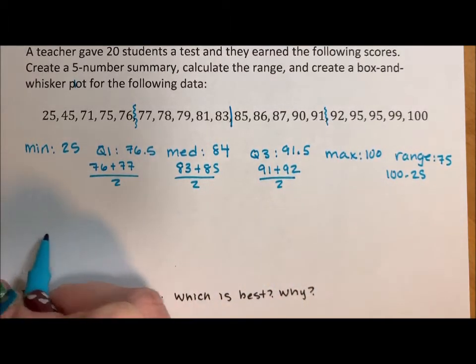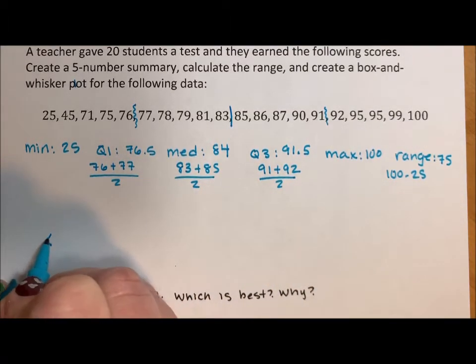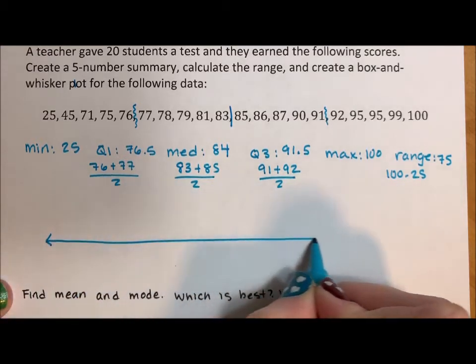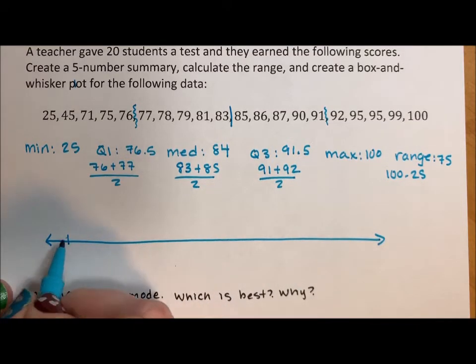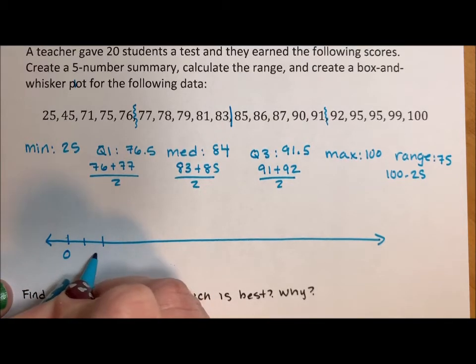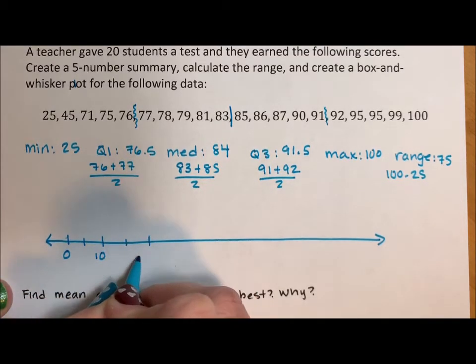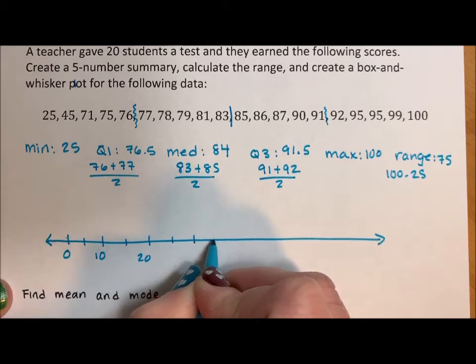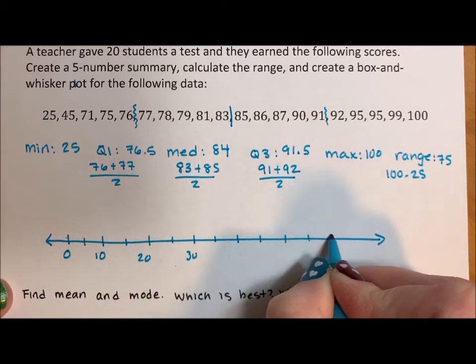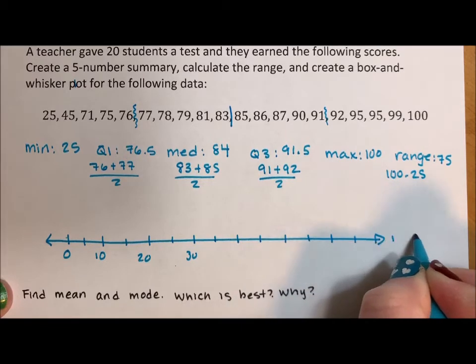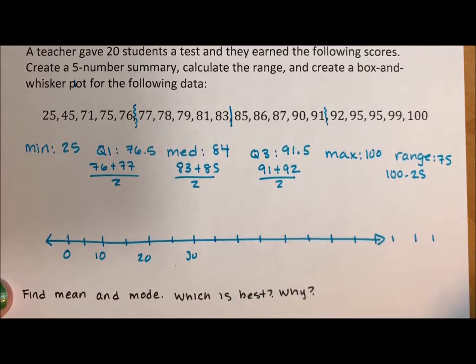The box-and-whisker plot, we're going to do a number line. Because this is a 75-point range, I am going to start at zero and go 10, 20, 30, 40, 50, 60, 70, 80. Oops, this is not going to work.